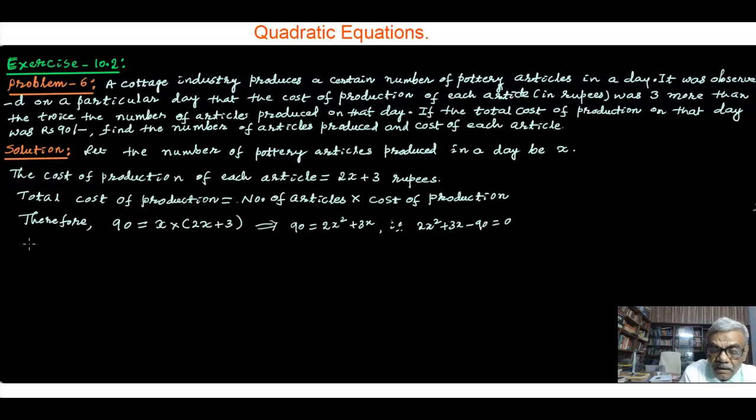Here, ac equal to 2 times minus 90 equal to minus 180. That 180 can be factorized in this fashion. That is 2, that is 90; 2, that is 45; 3, that is 15 and 5; 5, 1.